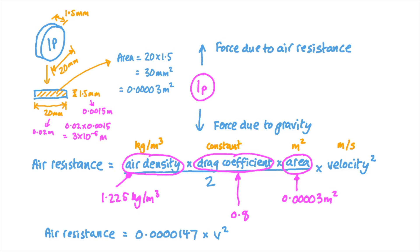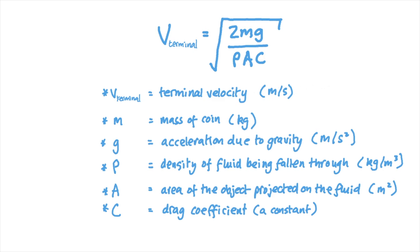So what's the terminal velocity of a British penny? Well, there's a formula to work this out. The terminal velocity is equal to the square root of 2 times m times g over rho times a times c, where m is the mass of the coin in kilograms, g is the acceleration due to gravity in meters per second per second, rho is the density of the fluid being fallen through by the object in kilograms per cubic meter, a is the area of the object projected onto the fluid in square meters, and c is the drag coefficient, again a constant.